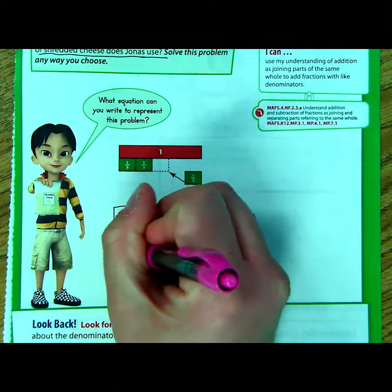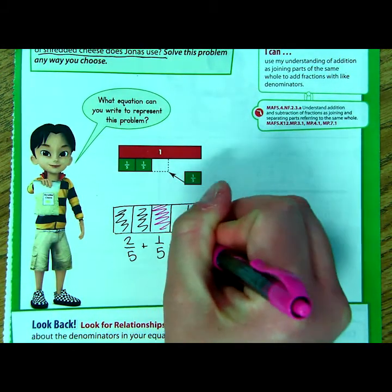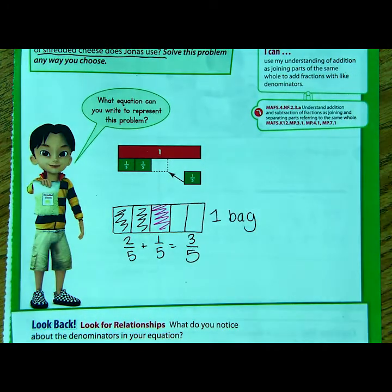So how much of the bag did he use? Well, if we add our two-fifths plus the one-fifth, we would get a total of three-fifths. So again, this is very similar. It's actually the exact same as what you did on Tuesday.